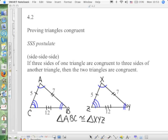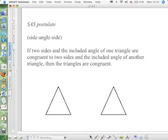The second one is the side-angle-side postulate, SAS. This one states that if two sides and the included angle of one triangle are congruent to two sides and the included angle of another, then the triangles are congruent.